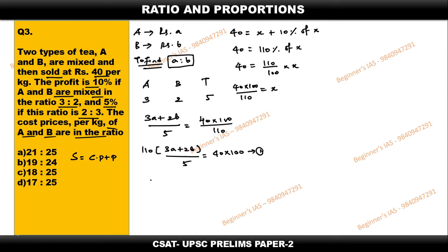Then if it is in the ratio 2:3, it makes the profit of 5 percent. See, if it is 5 percent, here just replace 5, therefore it will become 105 percent. If it is 105 percent, it will become 40 into 100 by 105. That logic just apply here. Find out the weighted average: 2a plus 3b by 5 which is equal to 40 into 100 by 105.